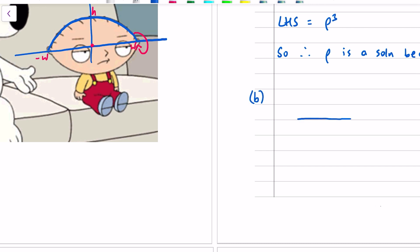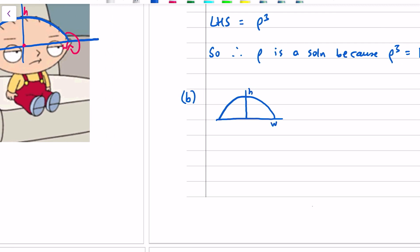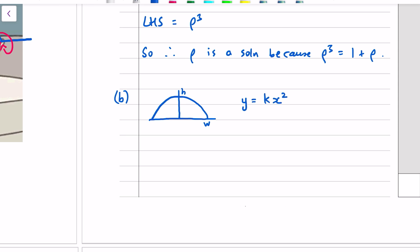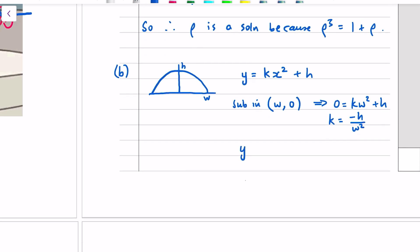So, first up, if it's a parabola, then it's of the form y equals kx squared plus h, vertex form, and then we sub in the coordinate, x equals w, y equals 0, into that equation, gives 0 equals kw squared plus h, k is minus h over w squared. So, our equation, y equals minus h over w squared, x squared plus h.